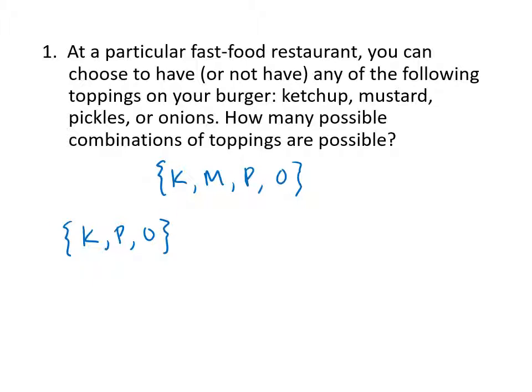Another possibility would be to have just mustard. That's also a subset. Another possibility would be to have no toppings at all. Another possibility would be to have all the toppings. Each of these combinations of toppings is actually a subset of this set with four elements.